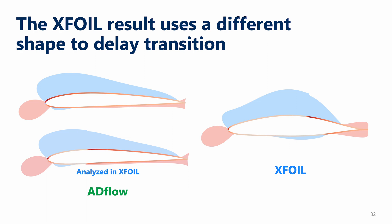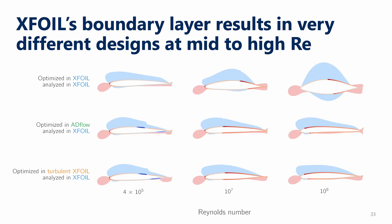Now let's take a qualitative look at the airfoils optimized at a range of Reynolds numbers. In the first row, we show the airfoils optimized in XFOIL. In the second row, they're optimized in the RANS solver, ADFLOW. In the final row, we force XFOIL to transition at the leading edge, effectively removing transition modeling but keeping all other models. At the lowest Reynolds numbers, the shapes look qualitatively similar, but we see big differences in the boundary layers. ADFLOW and turbulent XFOIL are optimizing assuming a turbulent boundary layer, which can resist adverse pressure gradients longer than a laminar one. XFOIL, on the other hand, knows it's a laminar boundary layer and can account for the separation that will occur.